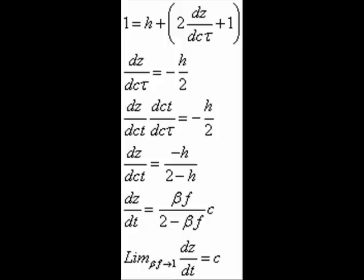I find that dz dt is equal to minus h over 2 minus h, replace what h was in terms of f, and we finally get the equation of motion for the ship as it's moving with speed dz dt with respect to these coordinates. And so we note then that as beta f goes to 1, indeed that expression does reduce to dz dt equals c, so you can use the space-time to get the ship arbitrarily close to the speed of light.